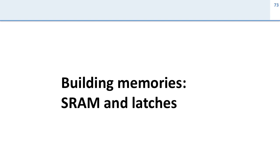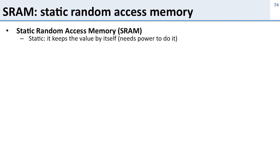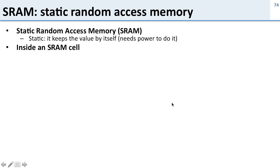Now that we've talked about using state elements, let's talk about how we actually build them. How do we build a circuit that remembers a value? The most basic circuits that remember a value are called SRAM, or static random access memory. Static means it keeps the value all by itself — it needs power to do this, but once you have power the circuit will keep its value. Let's see how an SRAM cell works.